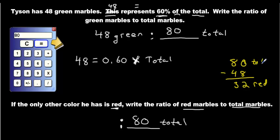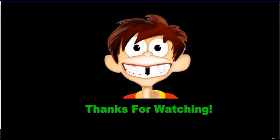So we have 80 total minus those 48 green ones, minus them out. Take them out. You get 32 red ones. So we can write 32 red to 80 total. And that would be your ratio. Let's make it a little bit neater. Let's go 32 red to 80 total.